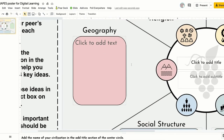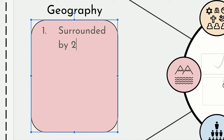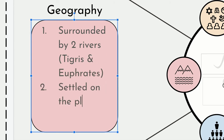Let's practice with geography. You've gone back and looked at your peers' notes about geography. You determined that there are three key ideas you want to put onto your poster. The most important idea will go first — the idea you selected: surrounded by two rivers, the Tigris and the Euphrates. The second key idea you decide to use is settled on the plains.